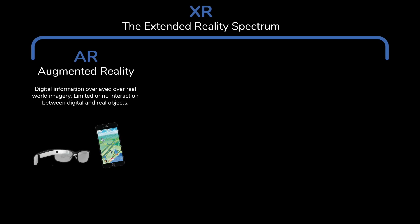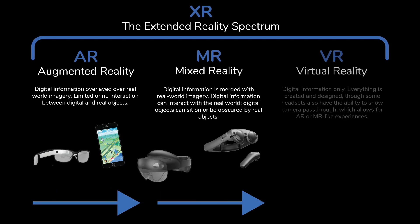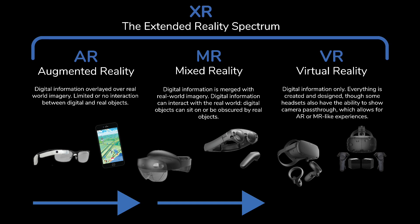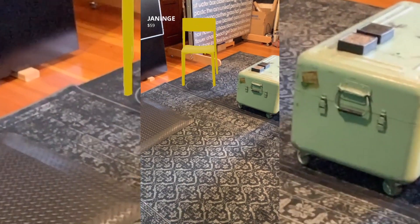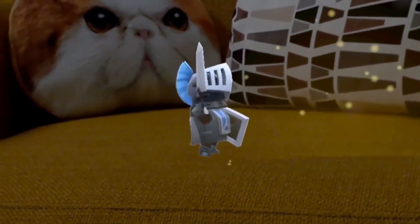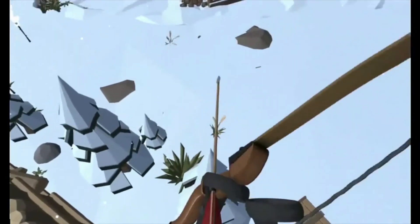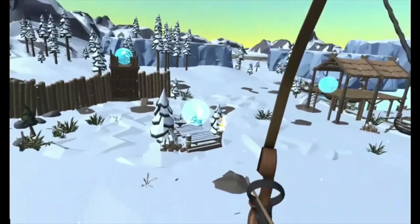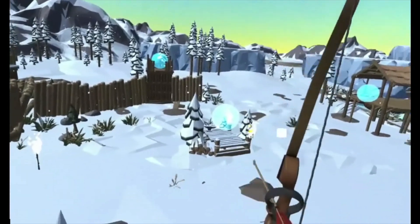XR is extended reality, a term that covers the spectrum of hardware and software for augmented, mixed, and virtual reality. XR covers everything from using your phone to place furniture in your living room, have characters run across your couch in Magic Leap, or be in a fantasy world using an HTC Vive headset, always using one app at a time.